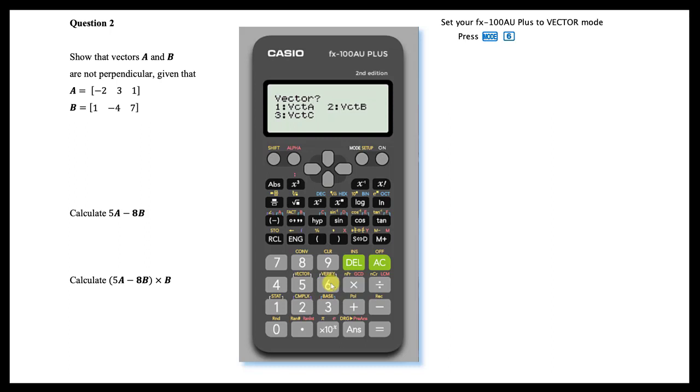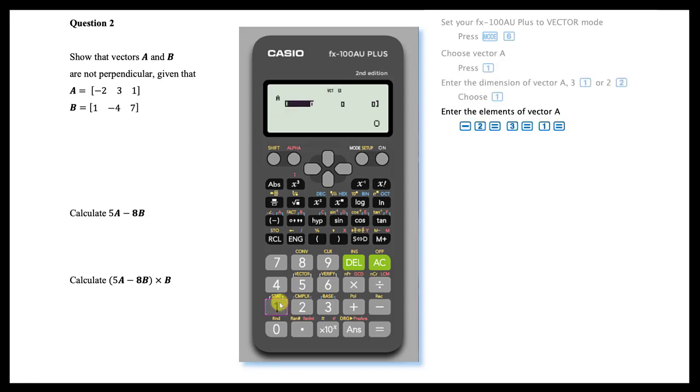First we have to define our vectors A and B. To define A, choose 1. Enter its dimension, in this case 3, by pressing 1. Enter the elements of vector A separated by equals.